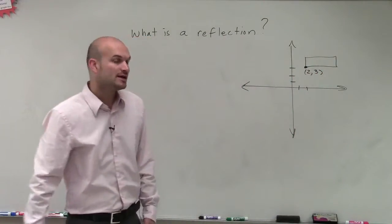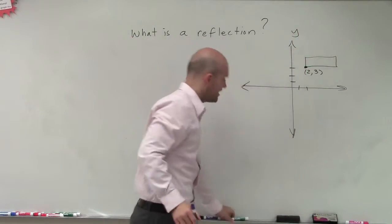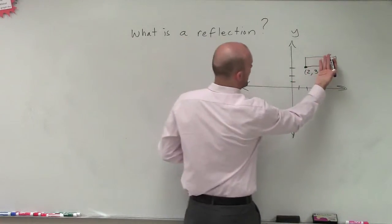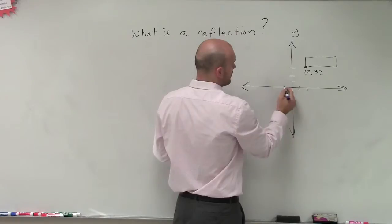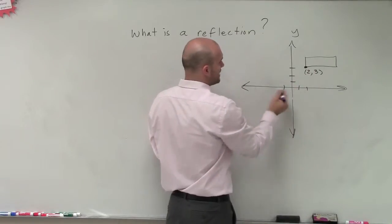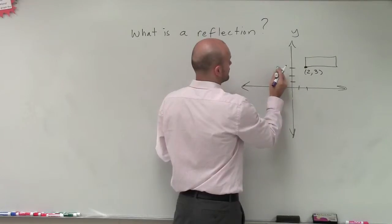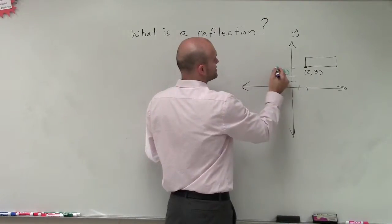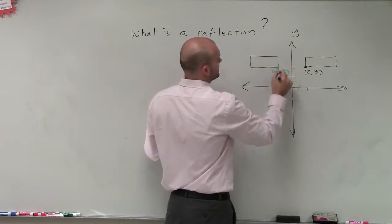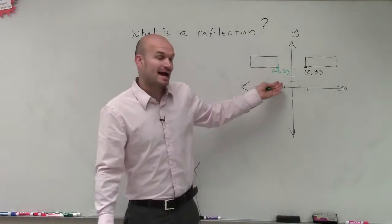Now, if I wanted to reflect this over my y-axis, then I would simply take this graph and reflect it right over. Therefore, this new point would now be at negative 2, 3. And then the graph would look something like that. I'm not trying to get exact perfect, but you can see that now it has been reflected.